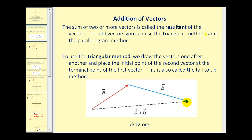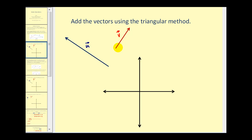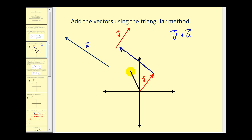Here we have a sketch of vector A plus vector B. Notice the initial point of vector B is at the terminal point of vector A, and the resultant vector is the dashed vector. Let's say we want to find the sum of vector V and U. We'll graph vector V as a position vector, then graph vector U starting at the terminal point of vector V. The resultant vector — the sum of these vectors — has its initial point at the origin and its terminal point at the terminal point of vector U. This is the tail-to-tip, or triangular, method.